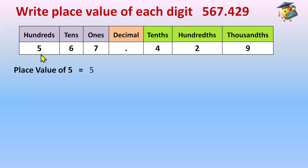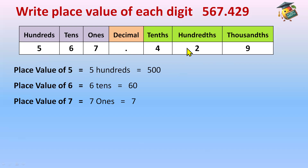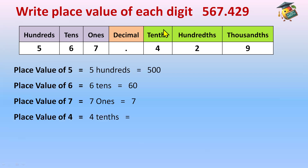Place value of five is five hundreds, or 500. Place value of six is six tens, or 60. Place value of seven is seven ones, or simply 7. Now let's move to the decimal part. Place value of four (in tenths place) is four tenths, or four over ten in fractional form, or 0.4 in decimal form.